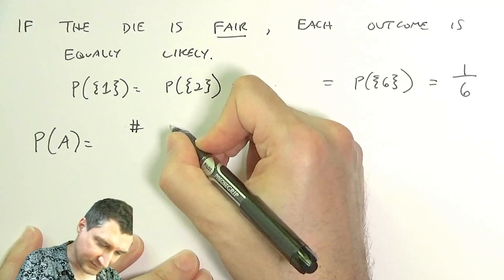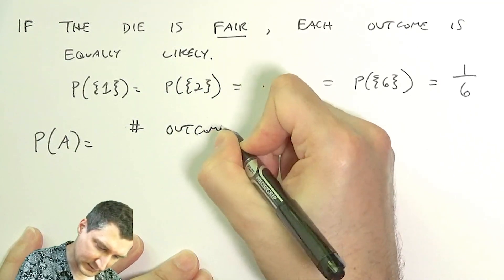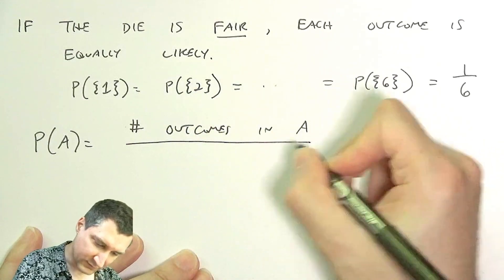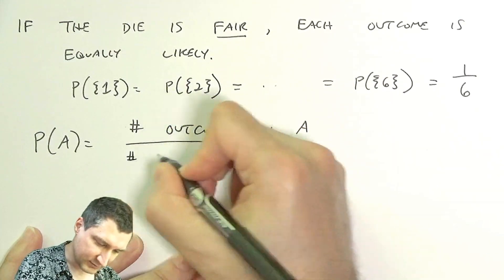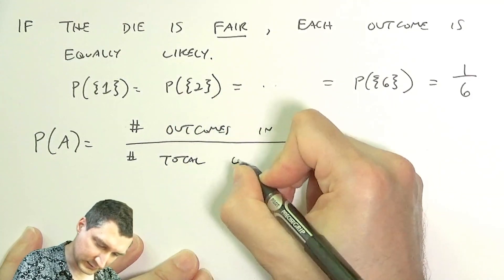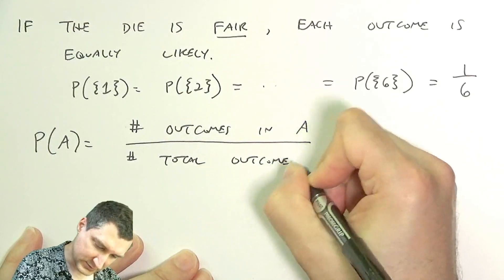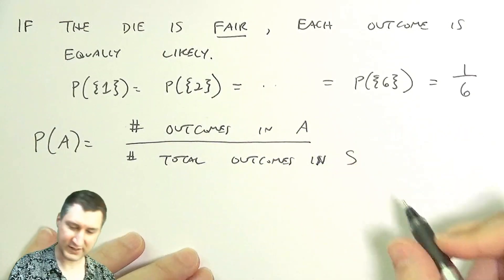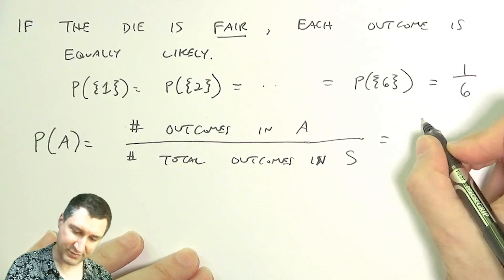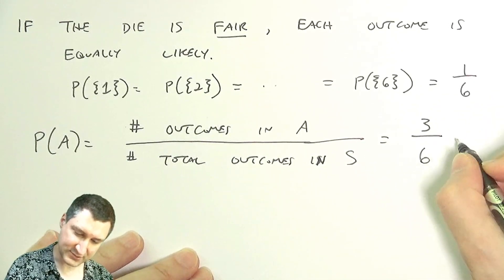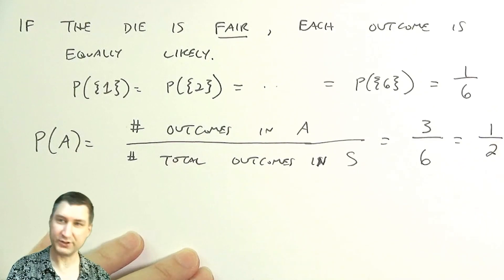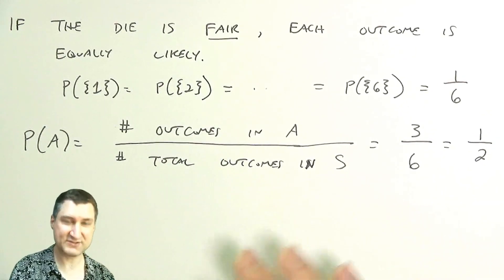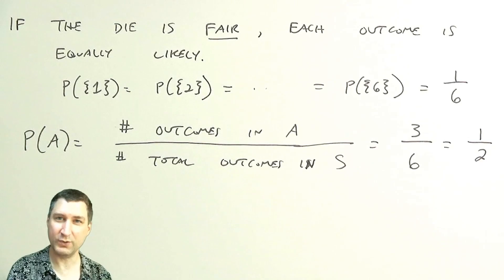We can go back and say the probability of A is really nothing more than the number of outcomes in A over the number of total outcomes in S. In our case we have three even numbers, six total numbers, so the probability of rolling an even number is a half.